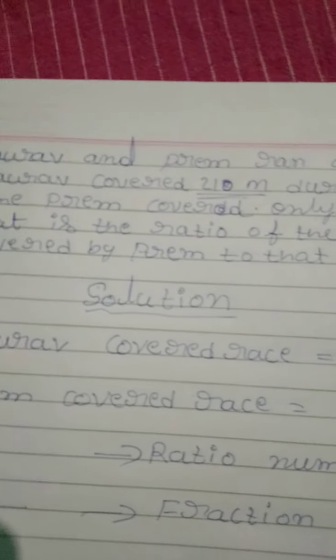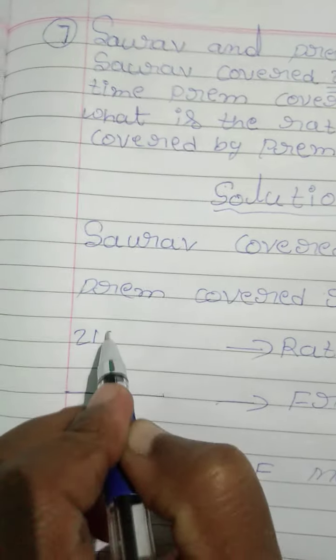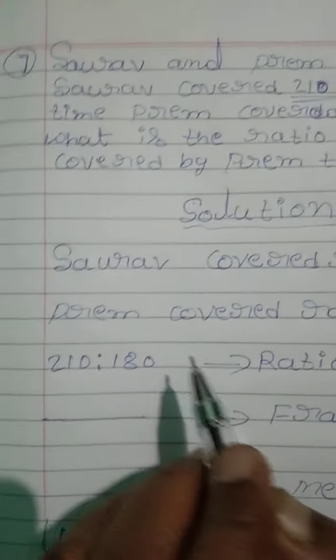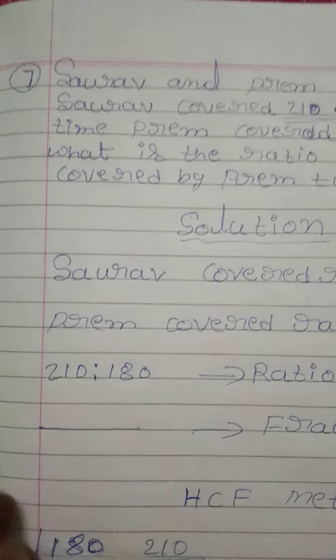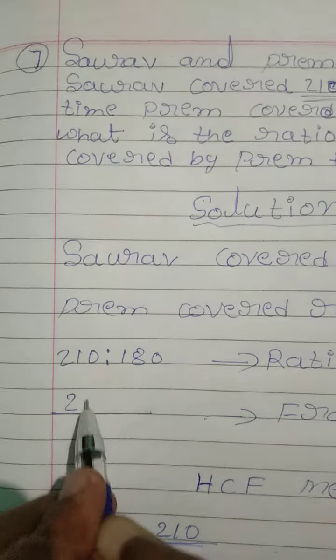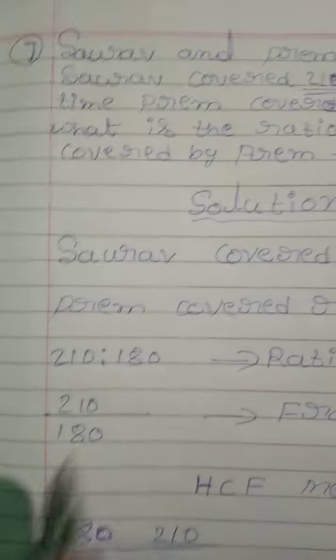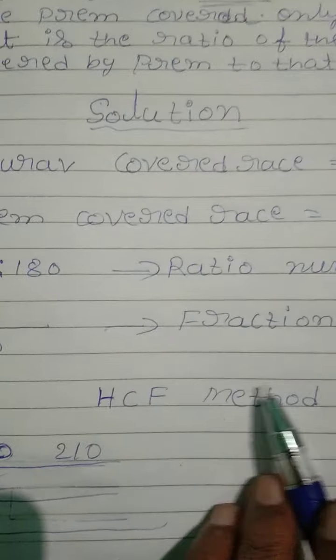Now convert the ratio numbers. First, 210 is to 180. Then convert ratio numbers into fractions, 210 by 180. Now find the HCF of numerator and denominator using HCF method.